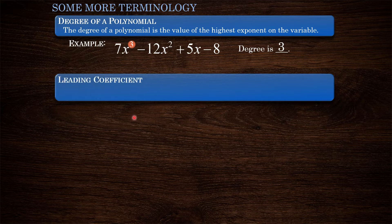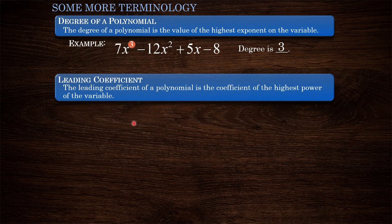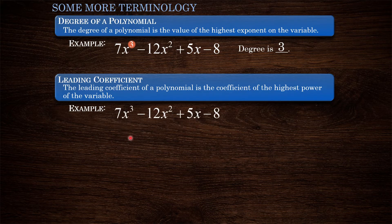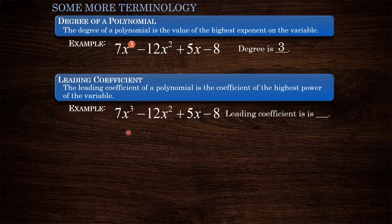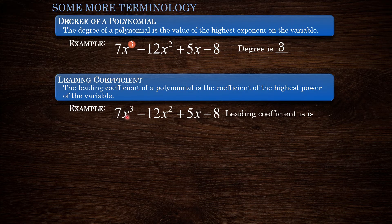What is the leading coefficient for a polynomial? It is the coefficient of the highest power of the variable. The leading coefficient for this polynomial will be the coefficient that goes with the highest power of x. We noted that it is a degree 3 polynomial — that is the highest exponent on x. So the coefficient for that term is 7, which means that the leading coefficient for this polynomial is 7.